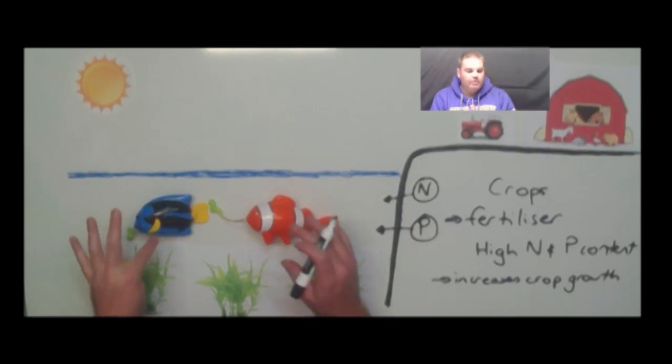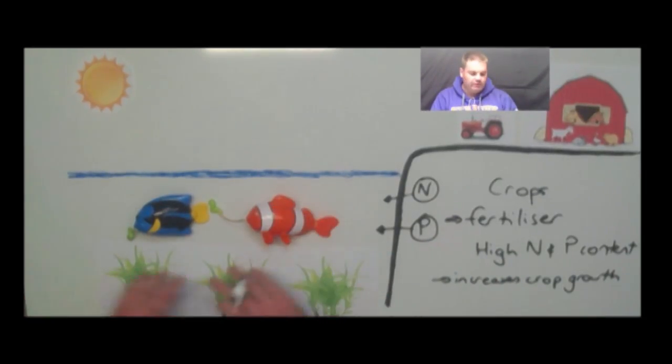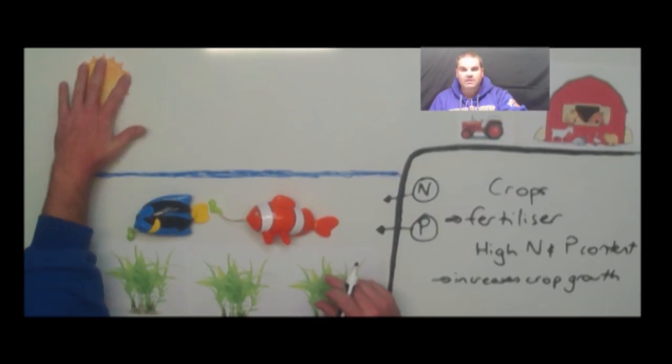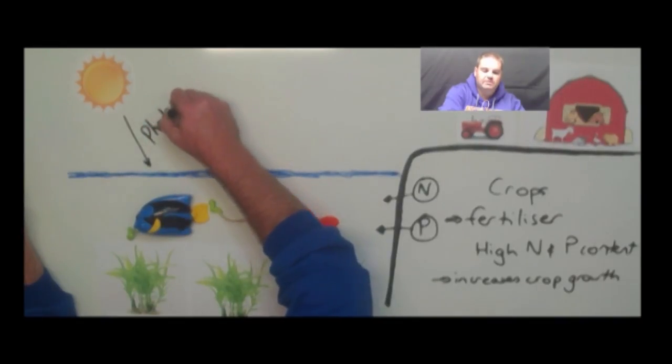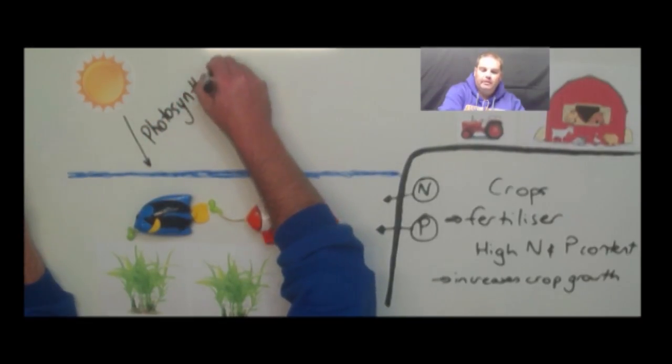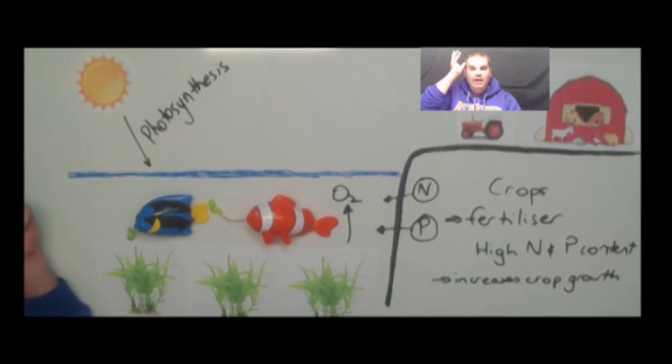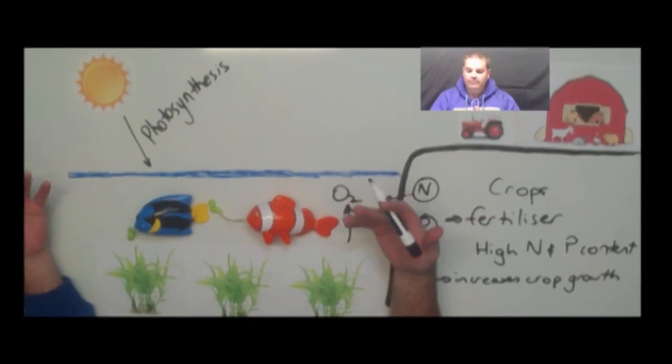So over here I've got Nemo and I've got Dory and they're going to be helping me out today. So in an ideal waterway, we've got marine life here like the fish, we've got the plants down the bottom here. The plants grab sunlight from the sun which allows them to undergo photosynthesis. Now that photosynthesis releases oxygen into the waterway and that's basically what the animals breathe that allows them to survive.